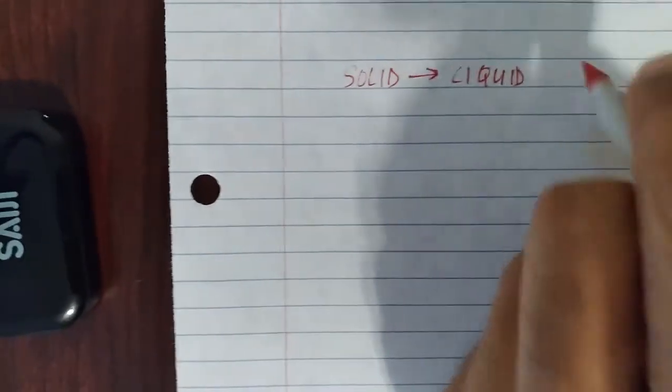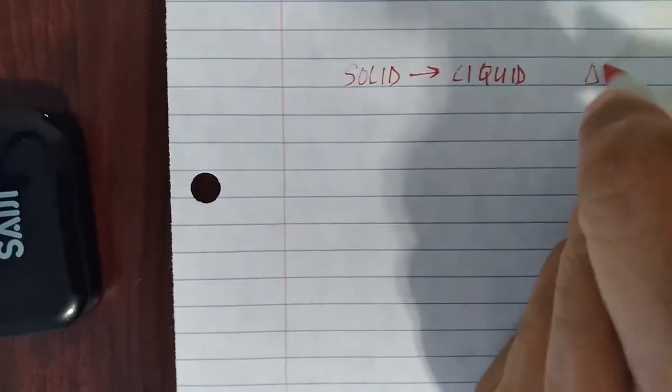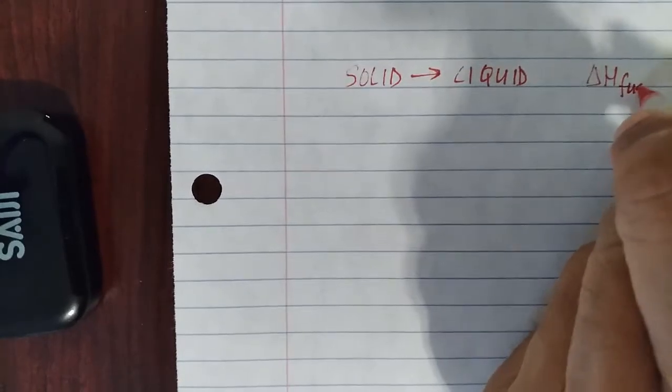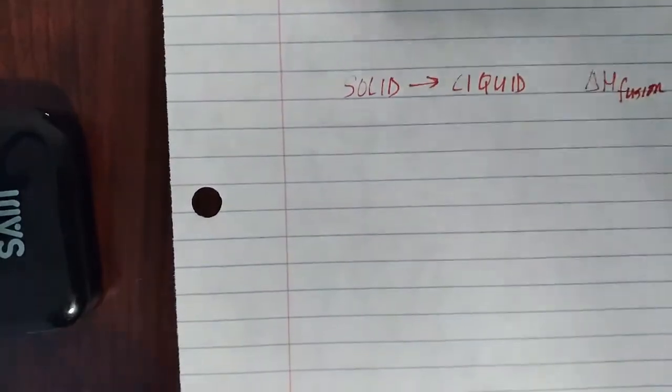Solid to liquid. That is melting, also known as fusion. So there's a delta H of fusion that is associated with that.